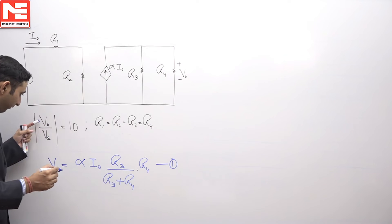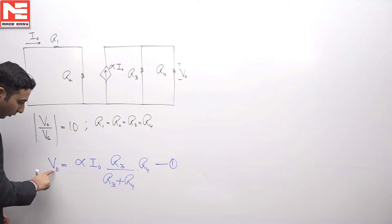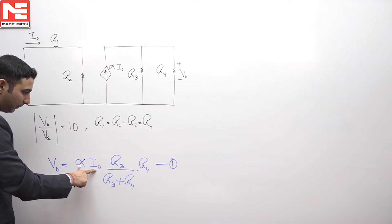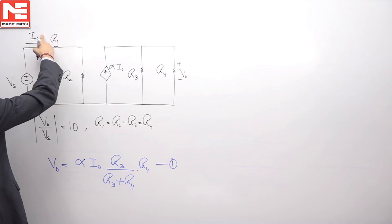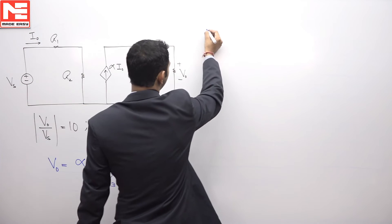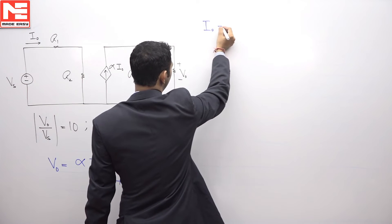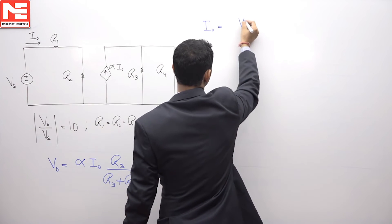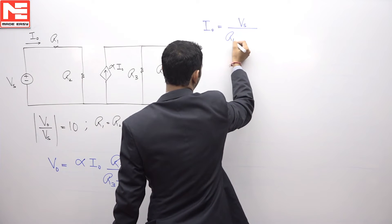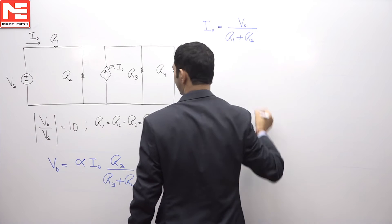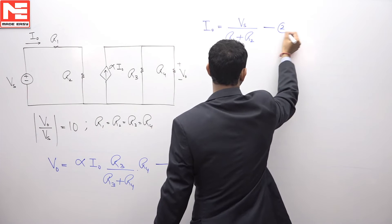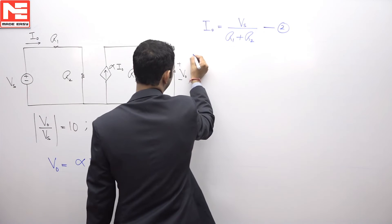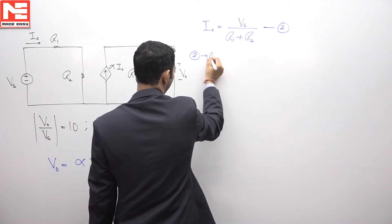I want to find the ratio of V naught and Vs. What I have got over here V naught, I naught I want to replace in terms of either Vs or V naught. So you can see I naught, this will be equal to voltage Vs divided by R1 plus R2. Substituting this equation that we are getting from here, let us say equation number 2, that is we are substituting second in equation 1.